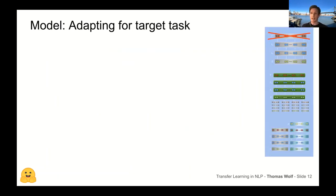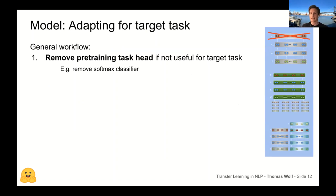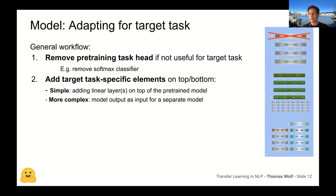Once you've pre-trained a model, you want to adapt it to your target task. The general workflow is: remove the pre-training task head — usually the last layer that projects hidden states back onto the vocabulary — and replace it with an adaptation layer. If you just want to classify something, you can add a simple linear layer on top that projects the representation onto the number of classes, for instance just two classes for binary classification.